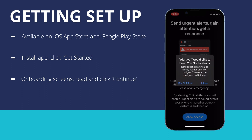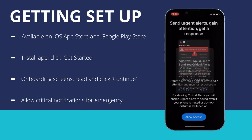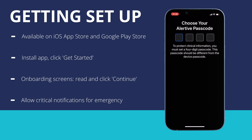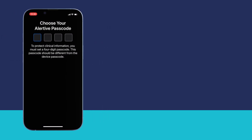When prompted, please select Allow to allow critical notifications on your device. This is used to notify you of an emergency, and the application cannot work properly if these permissions are not given.